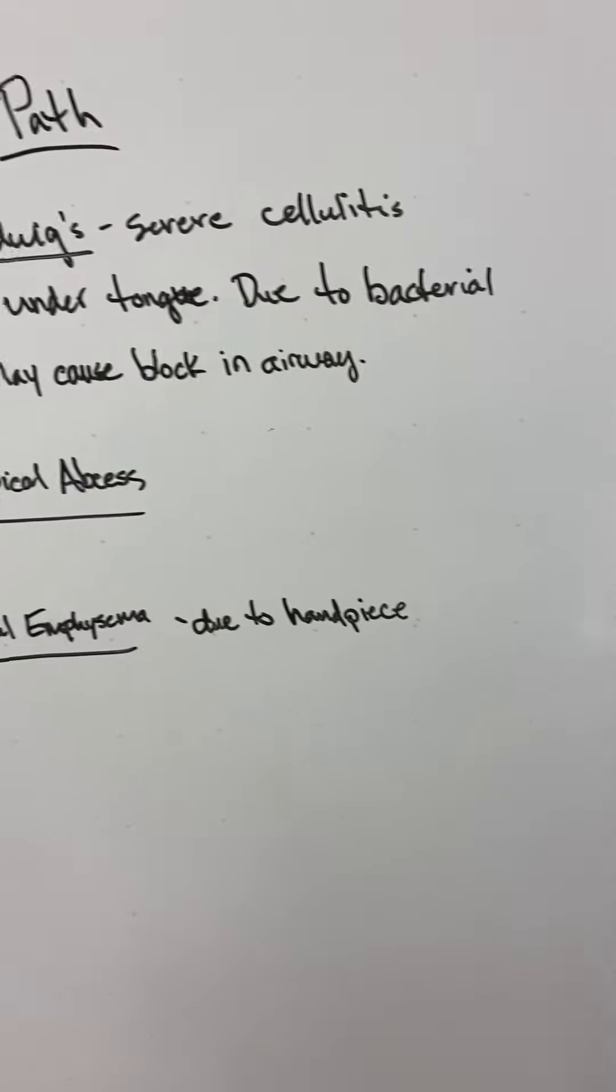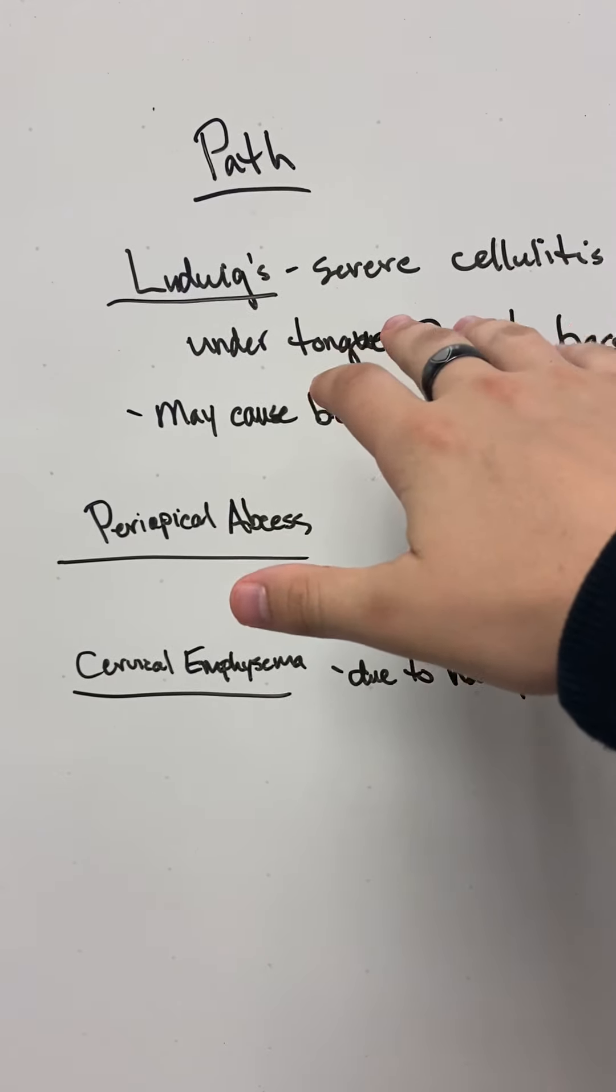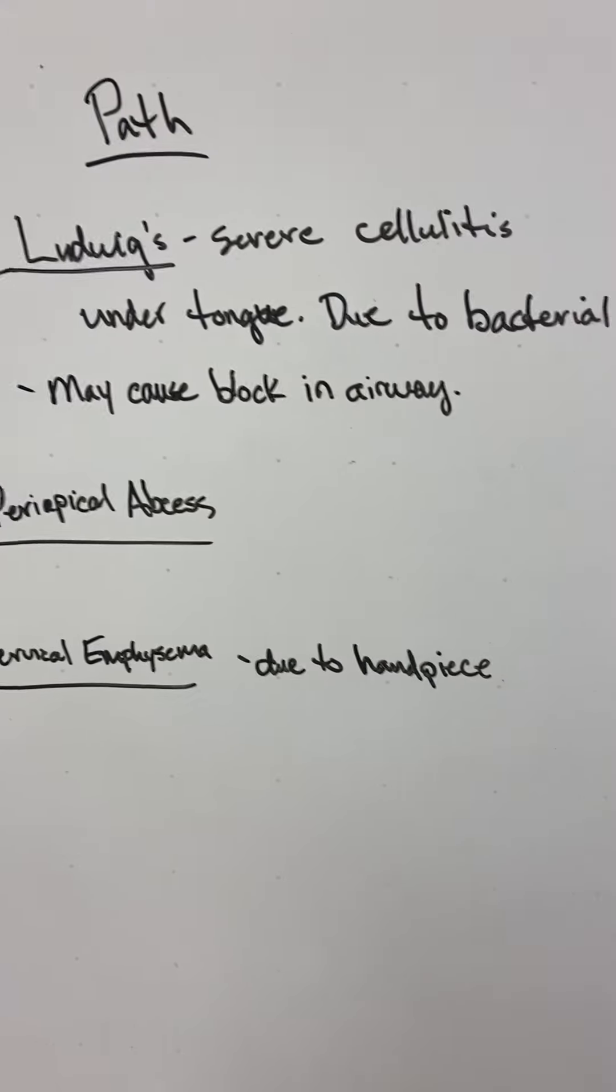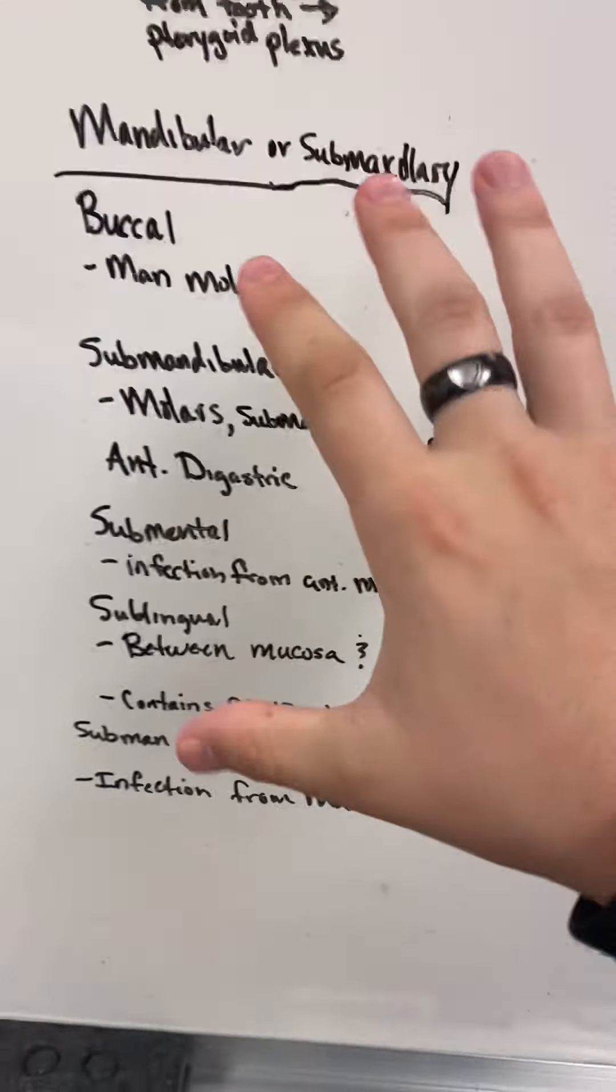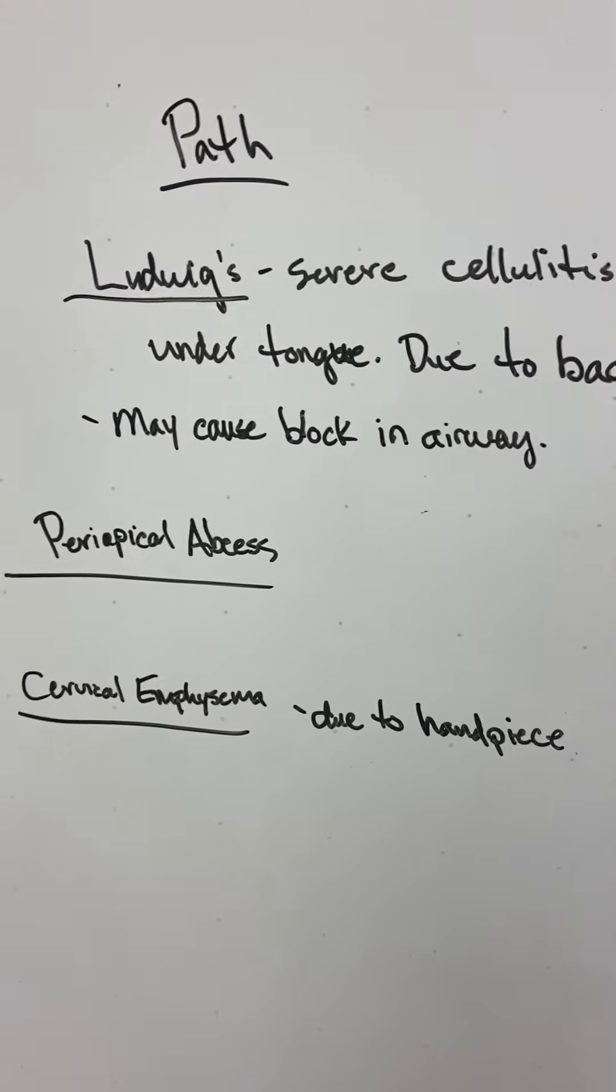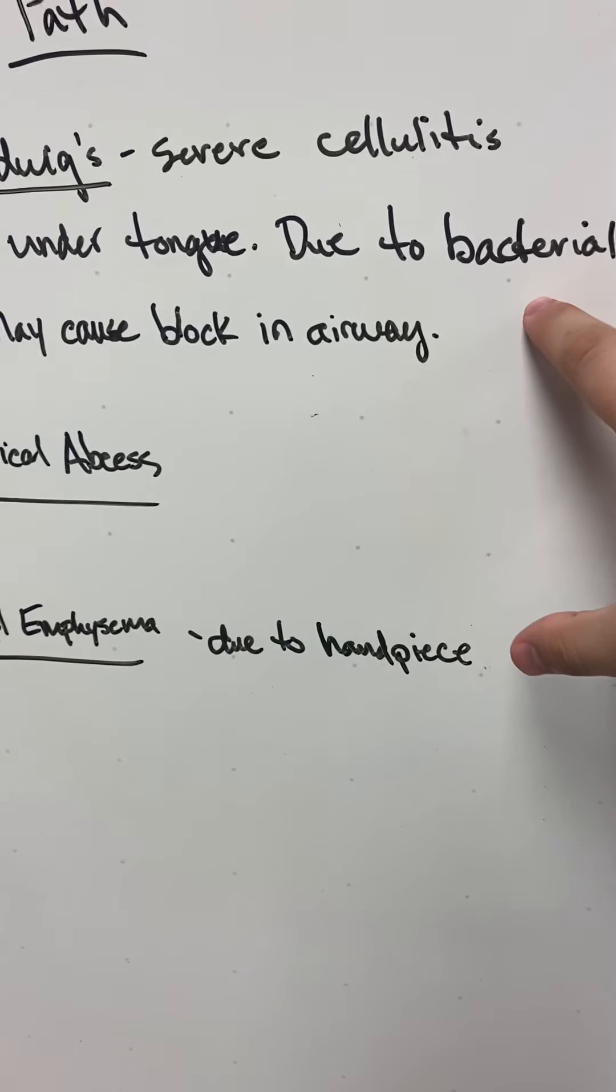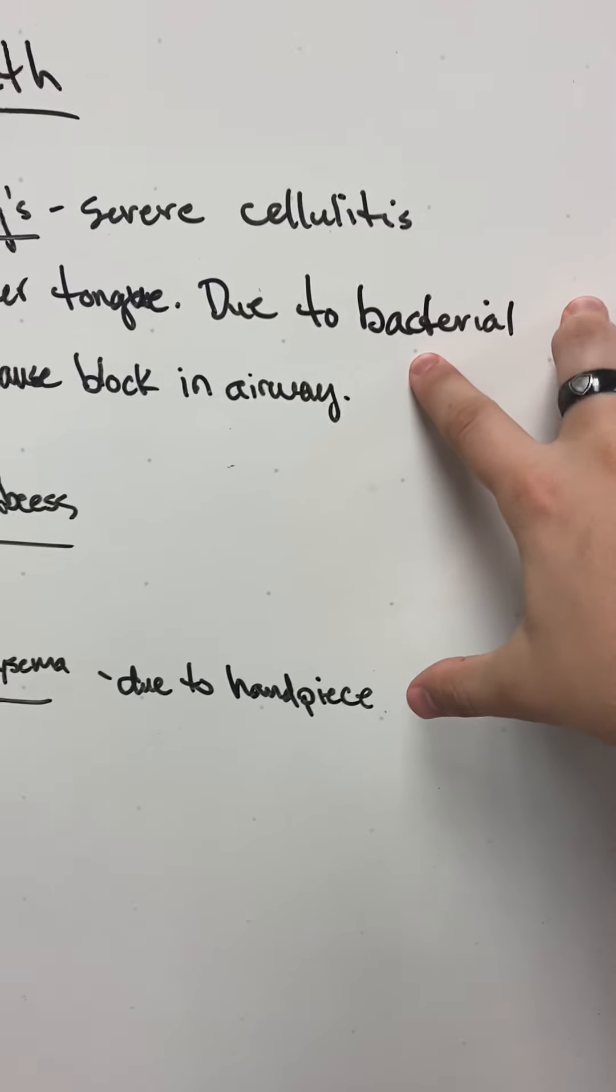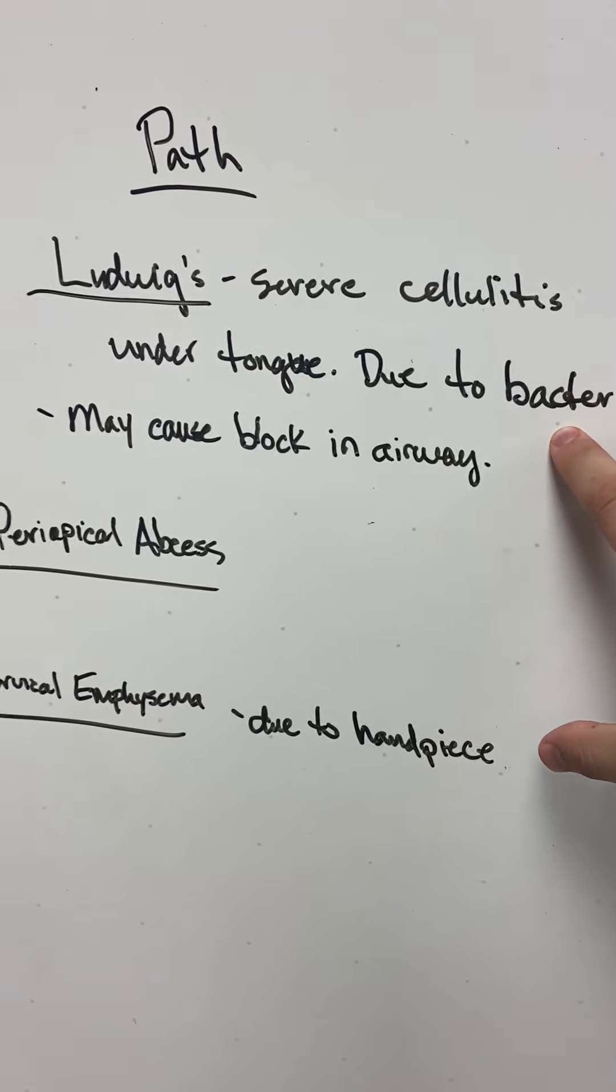So lastly, we have the pathology section. So it's Ludwig's. This is like a severe cellulitis under the tongue. It says it can be sublingual or submandibular, in this space or in this space. It goes under the tongue and can block the airway. It's normally due to bacteria, so we can just take amoxicillin or some antibiotic to get rid of it.